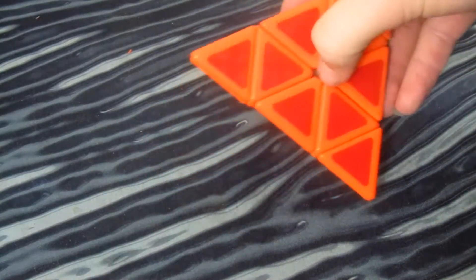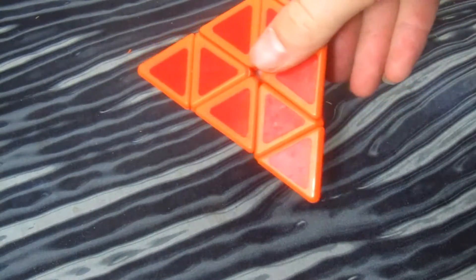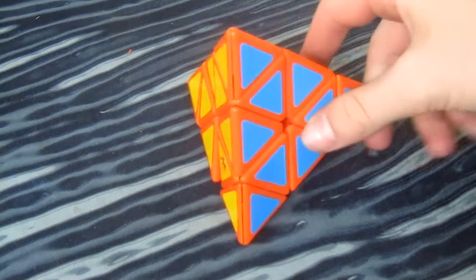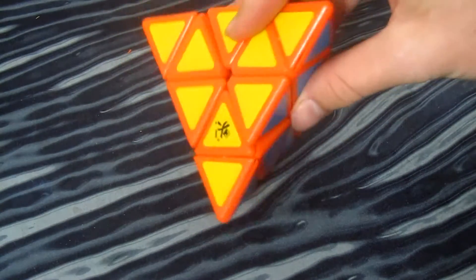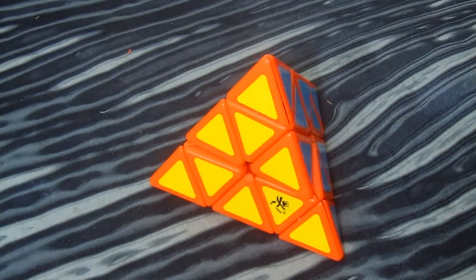The Dayan Pyraminx goes from about $15 to $17 on most cubing websites, but it comes with small, very dark colored shades.